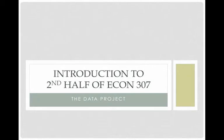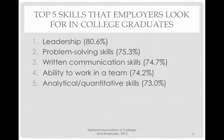Welcome to the second half of Econ 307, the data project. The top five skills that employers look for in college graduates are leadership, problem-solving, written communication, ability to work in a team, and analytical quantitative skills. The second half of the course is going to address all of these.